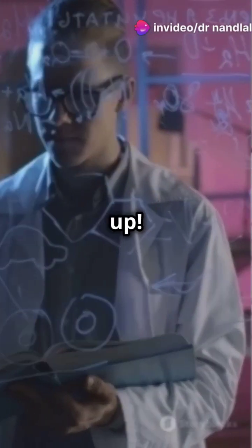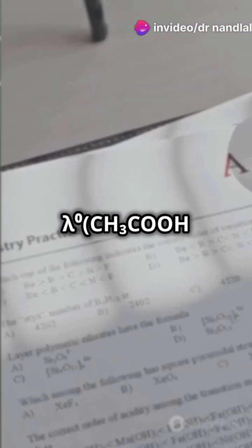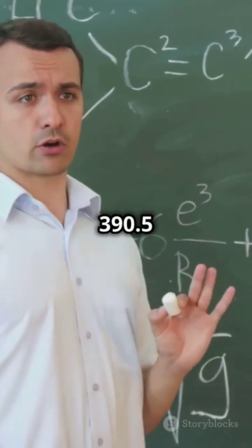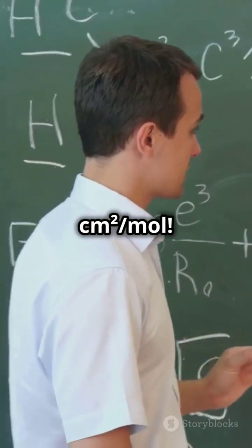Solution? Add them up. Lambda zero CH3COOH equals 349.6 plus 40.9 is 390.5 S cm² per mol.